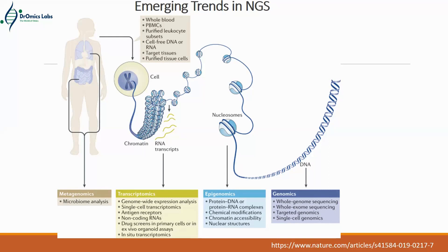Genomics involves generating whole genome sequences when a sequence is not yet known, using exome sequencing or genome sequencing to identify new variants associated with disease — whether in human health, plant health, or anything else. These are the emerging trends in NGS. Let's now look at some examples of how these are useful in the field.